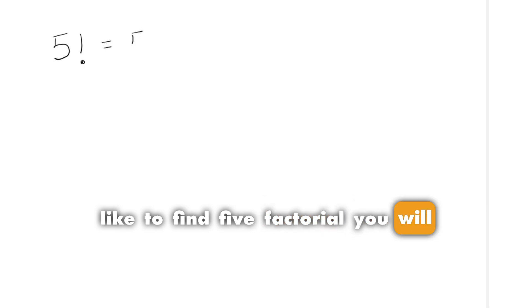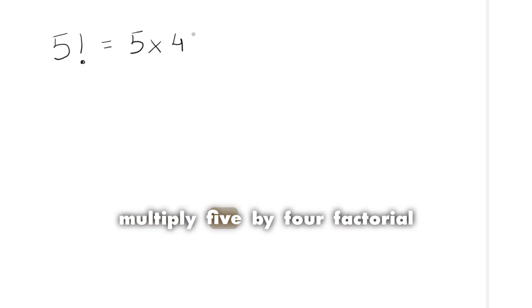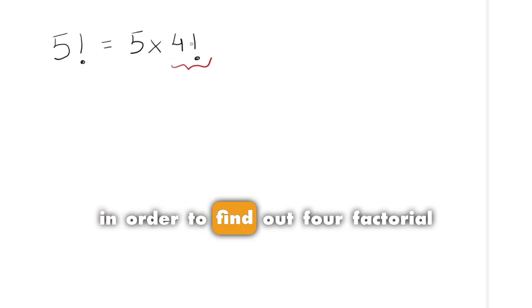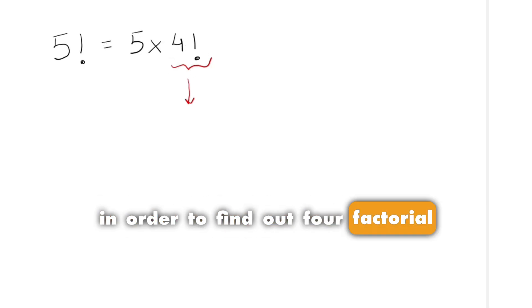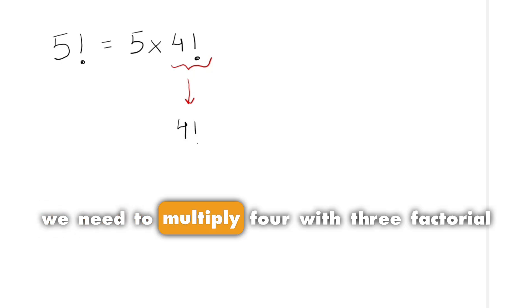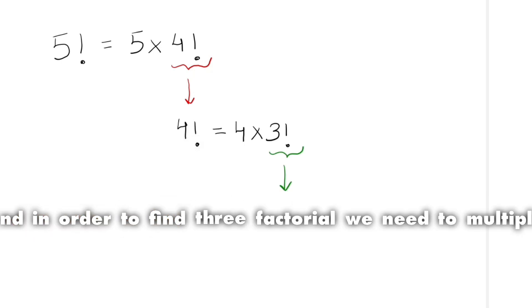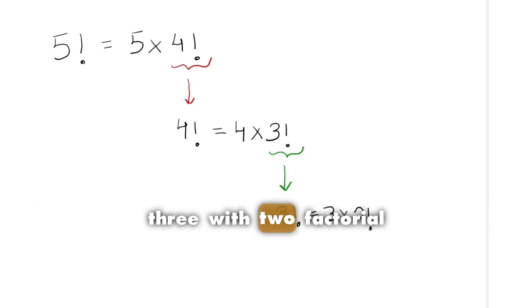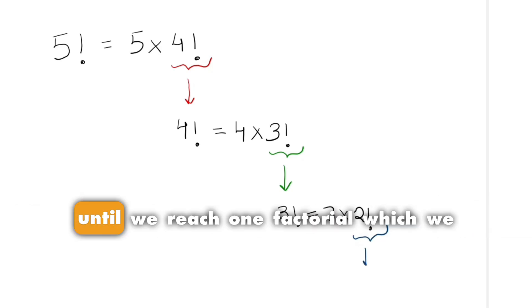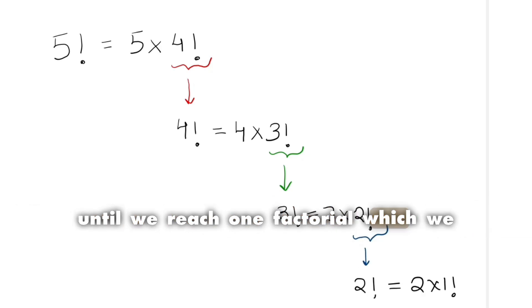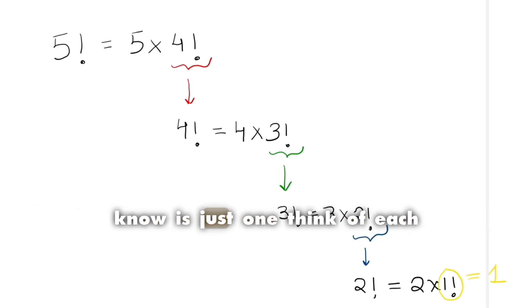To find 5 factorial, you will multiply 5 by 4 factorial. In order to find 4 factorial, we need to multiply 4 with 3 factorial. And in order to find 3 factorial, we need to multiply 3 with 2 factorial, until we reach 1 factorial, which we know is just 1.